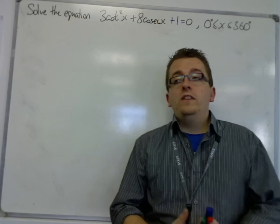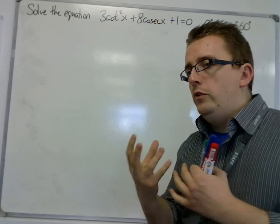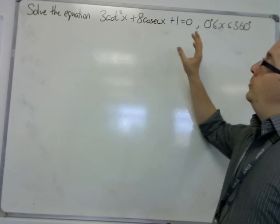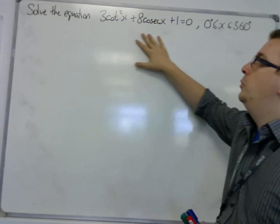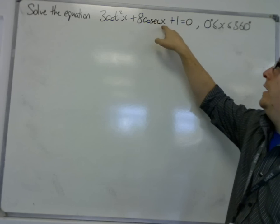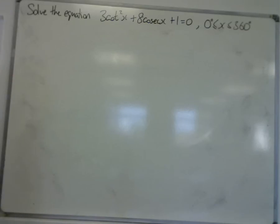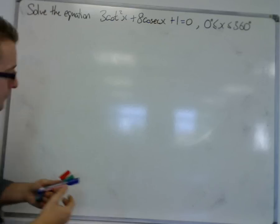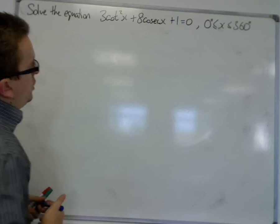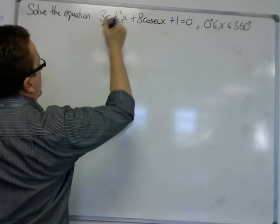This question has quite a few steps to it. First of all we want to use one of the trig identities that we have learned to be able to get this into what I would call a hidden quadratic. We have a squared term and a single variable term here, cosecx, so I would assume that this is going to become a quadratic equation. We need the equation that involves cot squared.